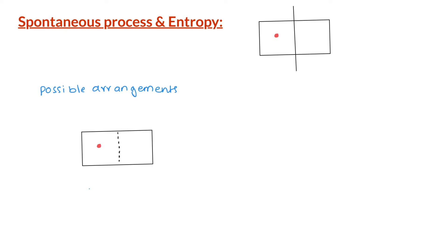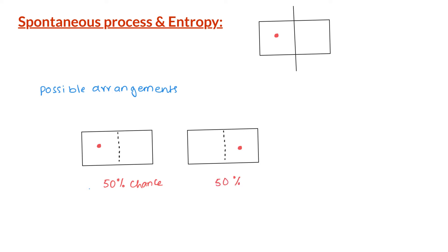The gas particle could be on the left hand side or the right hand side of the container. With only one particle, there is a 50% chance it is on the left hand side and a 50% chance it is on the right hand side.